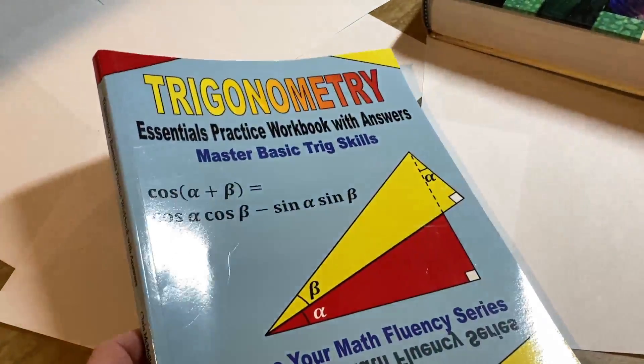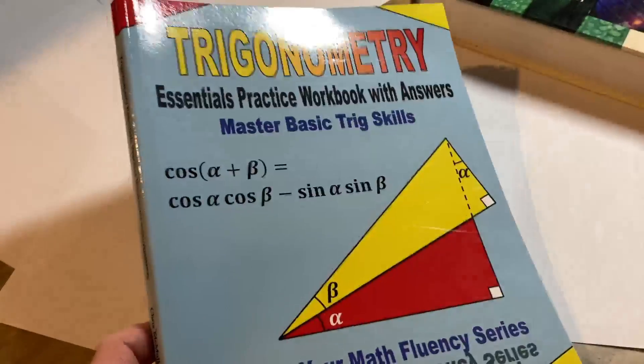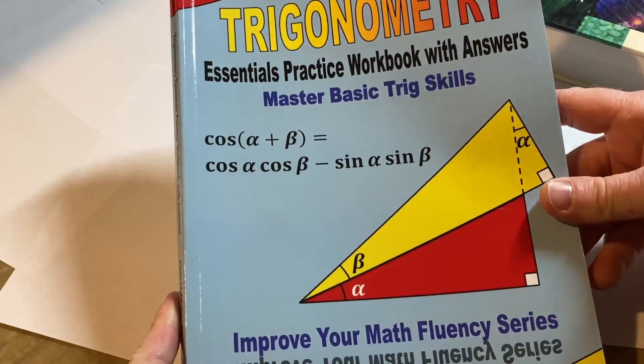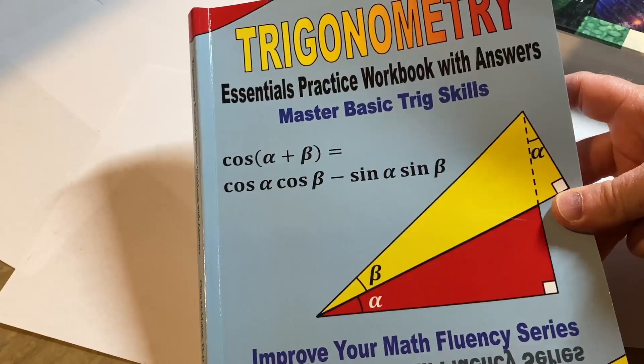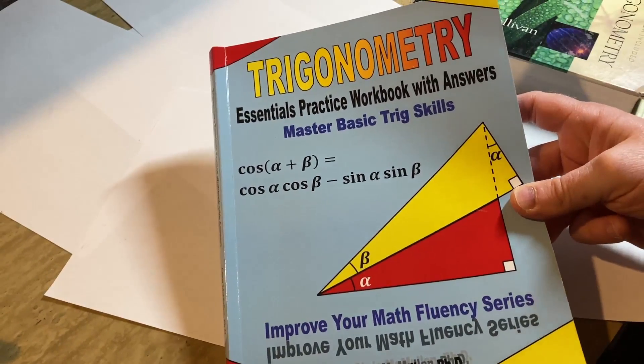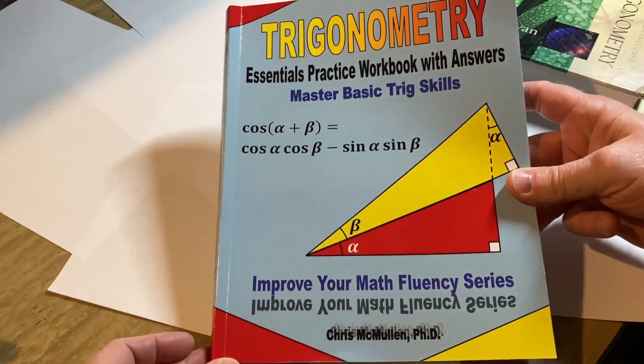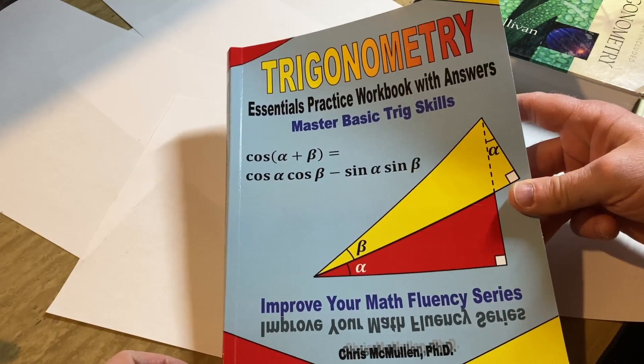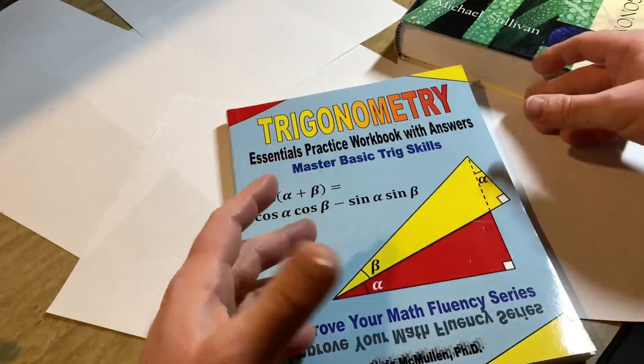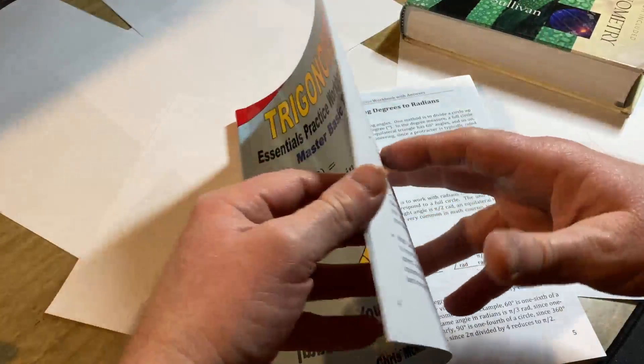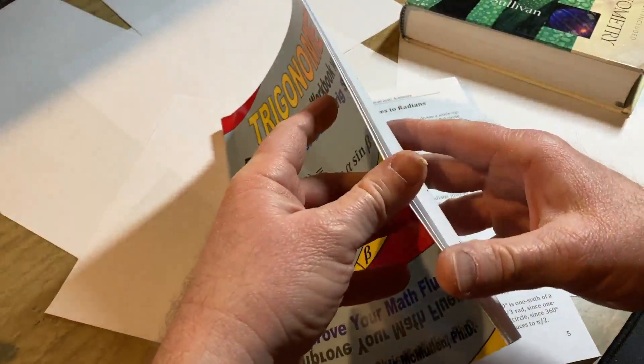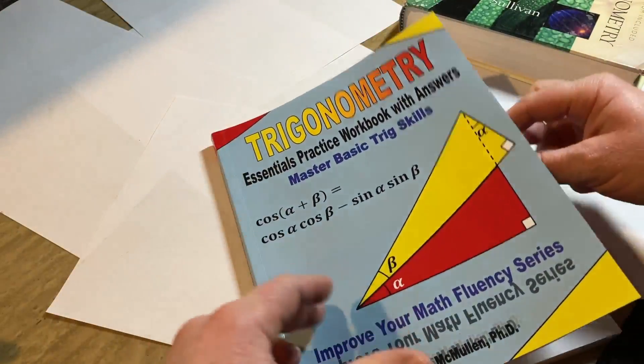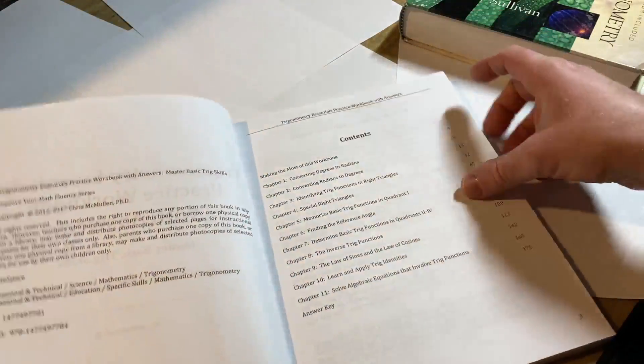And the last one is a book that's worth getting. It's the cheapest one of all of them and it's a relatively new book. It's called Trigonometry: Essentials Practice Workbook with Answers, Master Basic Trig Skills. This does teach you trig and he focuses on the important stuff, like the stuff you really need to know in order to do well in the class and pass tests. Let me show you the topics. He has answers to everything.